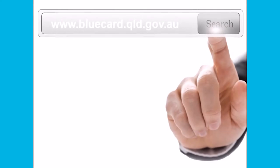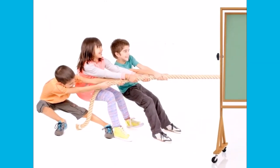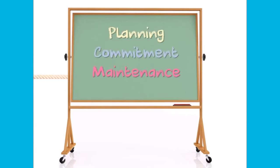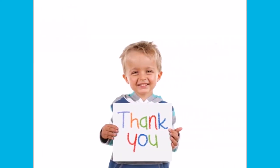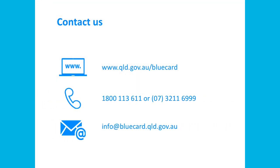To further assist you in developing and implementing effective child and youth risk management strategies, a toolkit is available on the risk management page of the blue card services website. It has been developed to provide information and guidance on the eight minimum requirements. Remember, safe service environments don't just happen — they require ongoing planning, commitment and maintenance. Thank you for taking the time to learn about this requirement, and we encourage you to watch the remaining videos on offer from the blue card services learning portal.